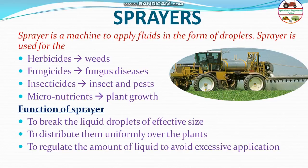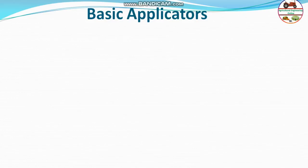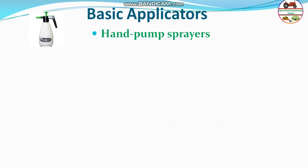Next are the basic applicators — the different types used by farmers. First is the hand pump sprayer, which we often use in kitchen gardens and home appliances. It has a small container with a nozzle and a plunger. You push the plunger and liquid comes out from the tip. This is called the hand pump sprayer.